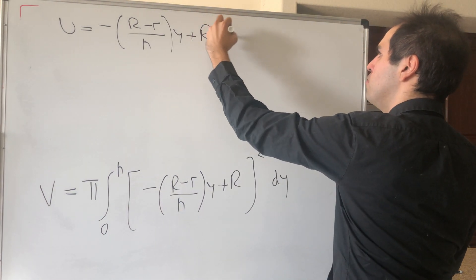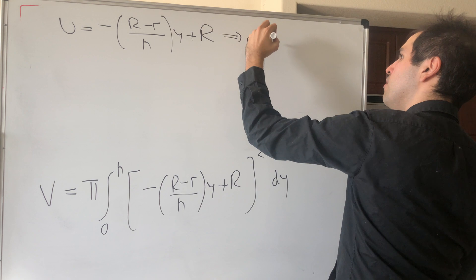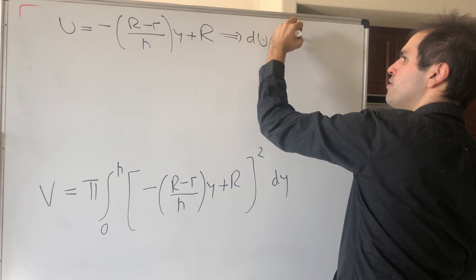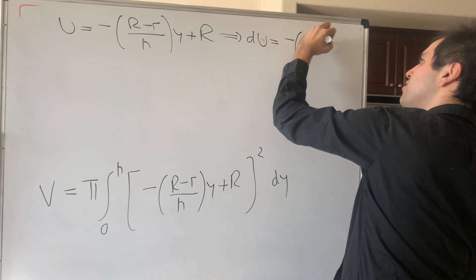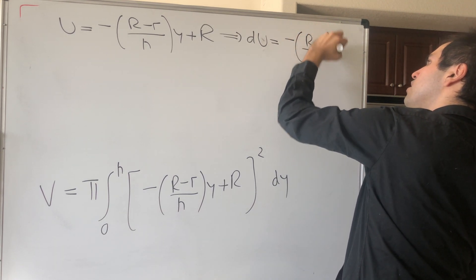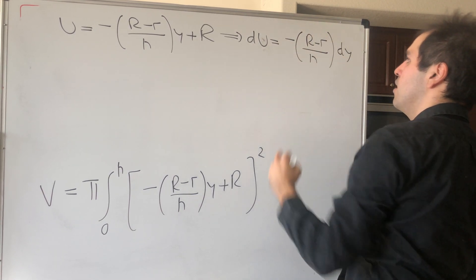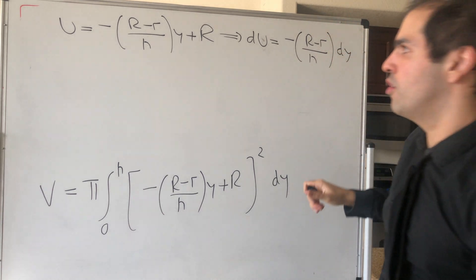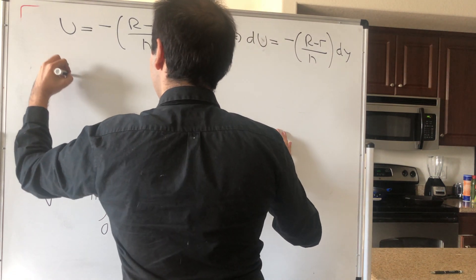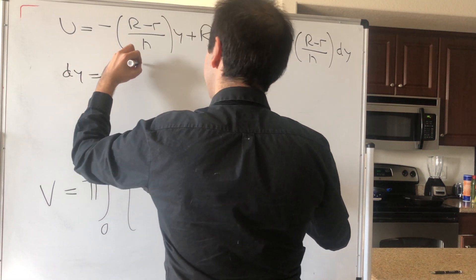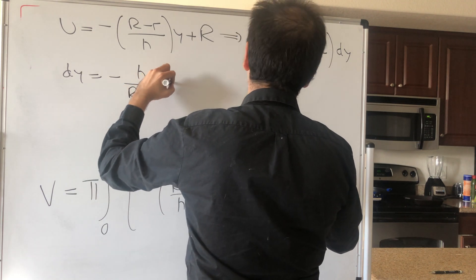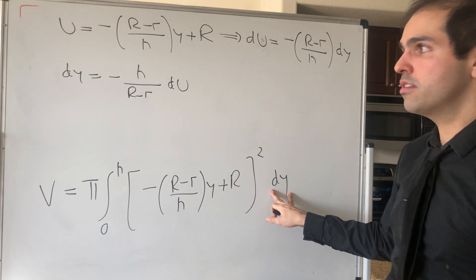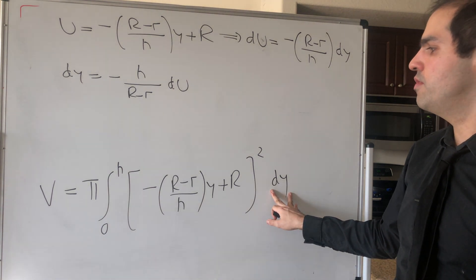Then du is minus (R minus r) over h dy, but then to calculate dy, you just take the reciprocal of that. So dy is simply minus h over (R minus r) du. And that's precisely what we want, because we want dy in terms of du.